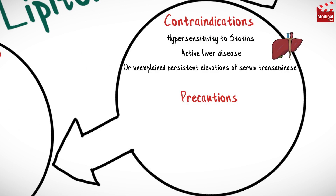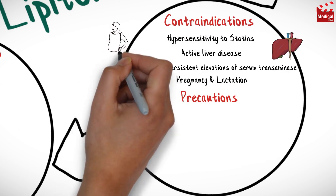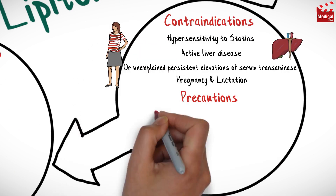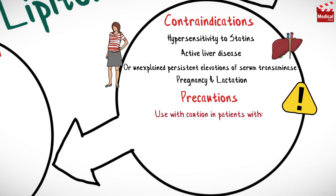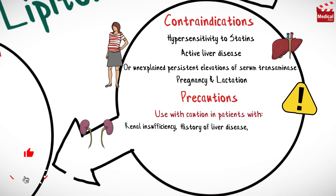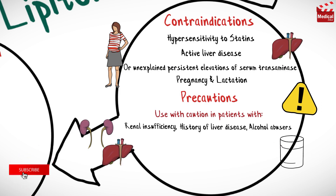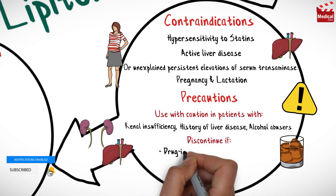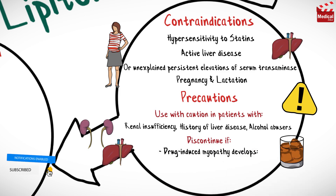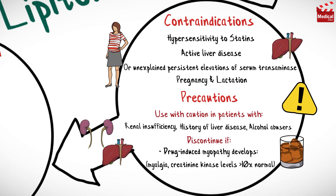Atorvastatin is also contraindicated in pregnancy and lactation. Use with caution in patients with renal insufficiency, history of liver disease, or alcohol abuse. Discontinue if drug-induced myopathy develops, which is characterized by myalgia and creatine kinase levels greater than 10 times normal.